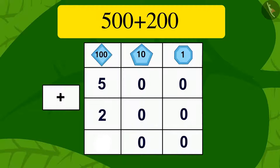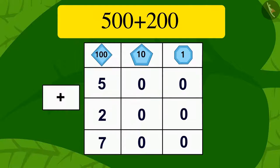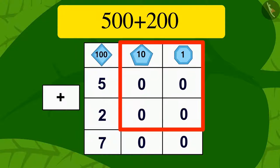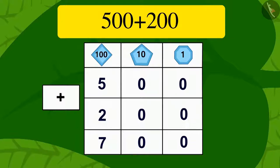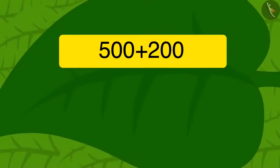Children, remember: if any two three-digit numbers are to be added and we have only zeros in the place of tens and ones, we can quickly find the solution by adding the two numbers written in the hundreds place and adding two zeros behind it. Like what Meenu did, uncle too wrote the answer 700 on the vine leaf with his finger.